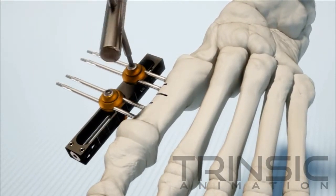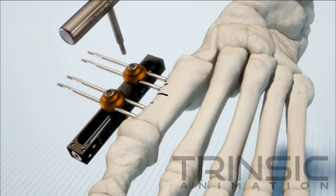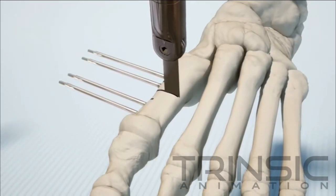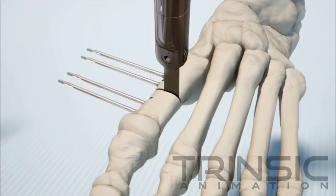Next, loosen the clamps enough to remove the mini rail while leaving the pins in place. Make a small incision and expose the bone. Mark the osteotomy location.